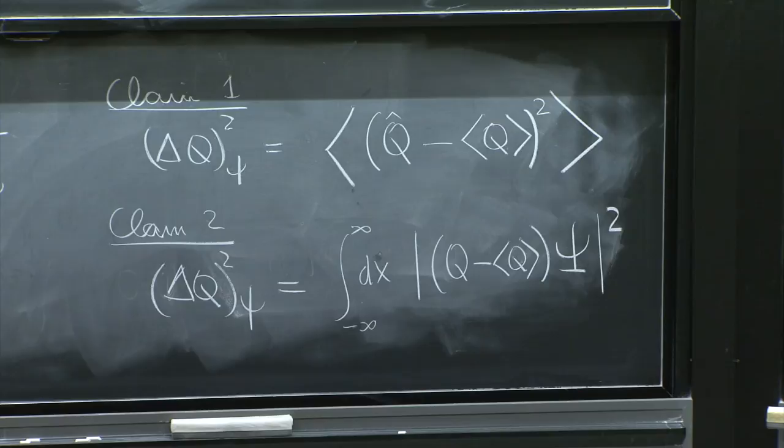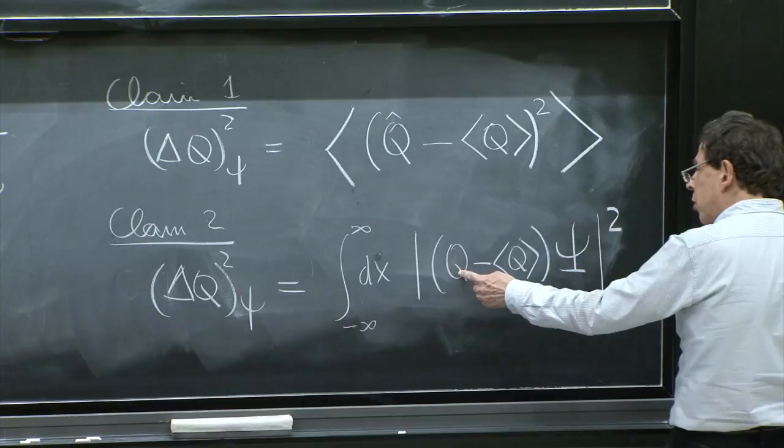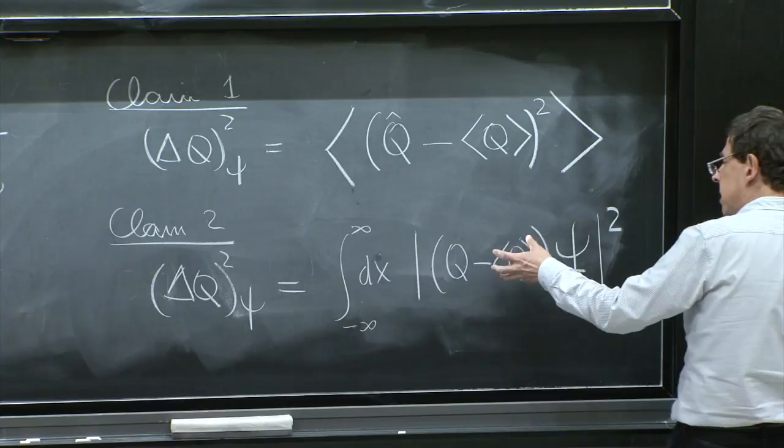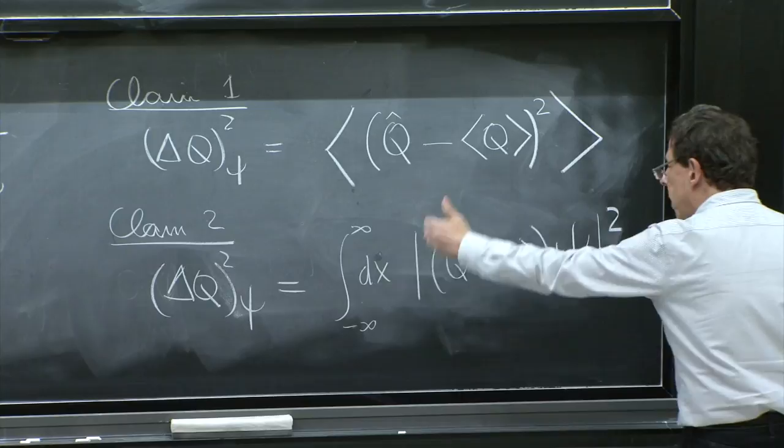You act on psi with the operator q and multiplication by the expectation value of q. This is an operator. This is a number multiplying psi. You can act with this on the wave function. You can square it and then integrate it. And that is also the uncertainty.